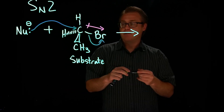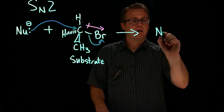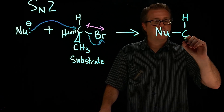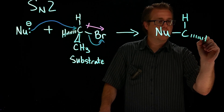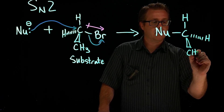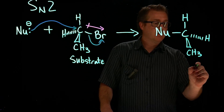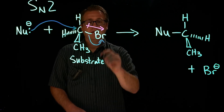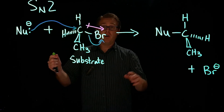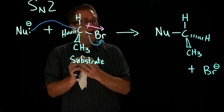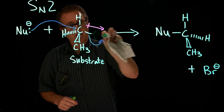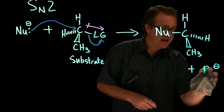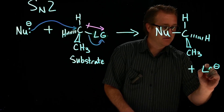That would then give us our product. Our nucleophile just formed a bond with that carbon and we have our hydrogen there, our wedged hydrogen, and our wedged methyl. Then what fell off? The bromine, which fell off and now has a negative charge — a bromide. If we go back and make this a more generalized mechanism, we will put our leaving group back on and turn that into our leaving group.